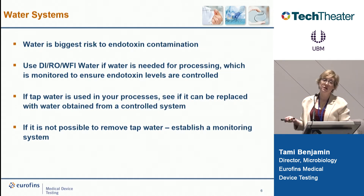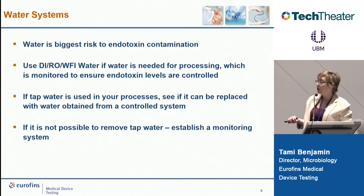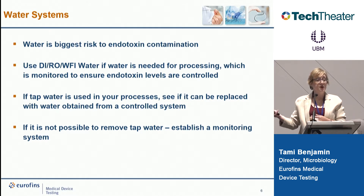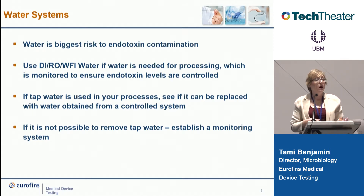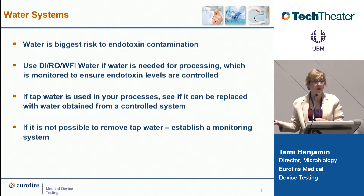Water systems are the biggest contaminant and the biggest issue when it comes to endotoxin on devices. You want to try to use a DI, RO, or WFI system. If tap water is used in your process, try to replace it with a controlled system, or put a depyrogenation step into your manufacturing process. A depyrogenation oven can be used depending on the product type — metal devices, or in some instances hydrogen peroxide. These can remove endotoxin, and when submitting a 510k to the FDA, including these steps is taken into consideration.